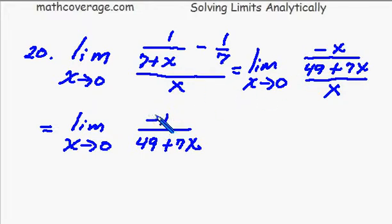And of course, now I can go ahead and plug 0, do the direct substitution, and plug 0 in for x. And then we're just left with negative 1 over 49 as your answer.